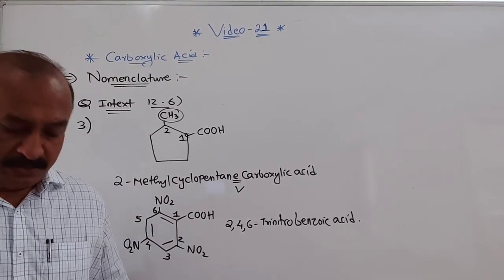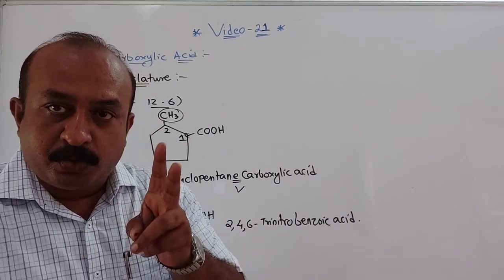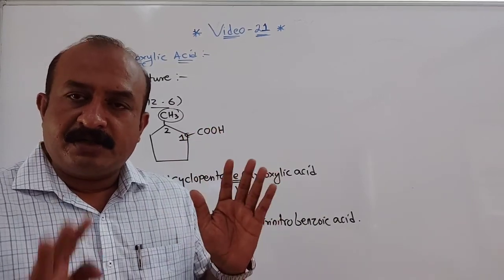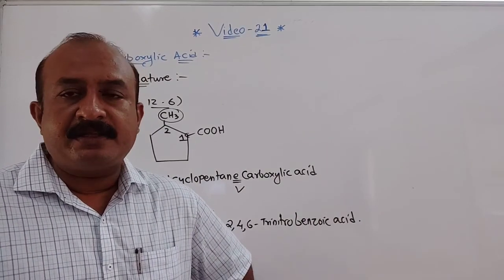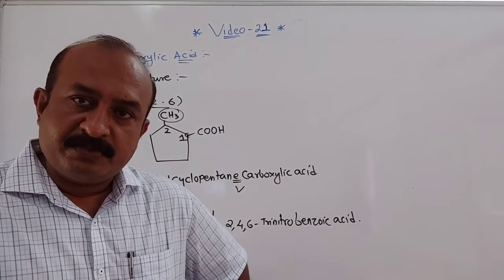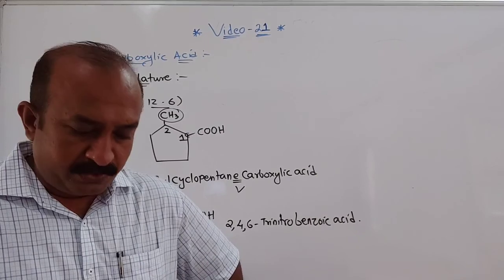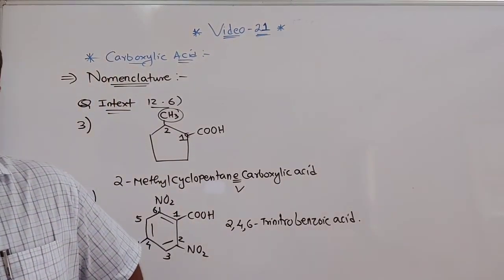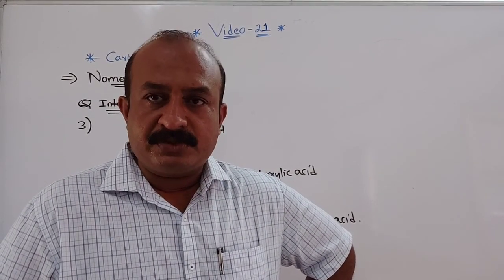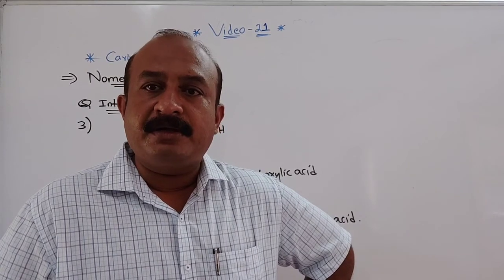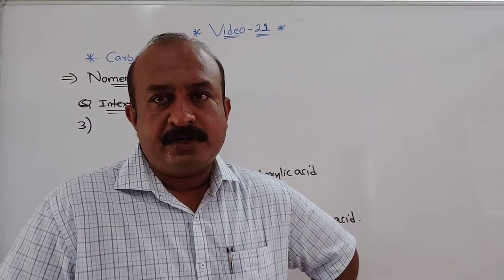So here we come to an end of the nomenclature part. Always remember: if more than two COOH groups are there, those COOH groups are not given numbers; instead, the other carbons are numbered and tricarboxylic acid is added at the end. In the next video, we will discuss the structure of the carboxylic group, resonance structures, and how it differs from carbonyl carbon. Thank you very much.